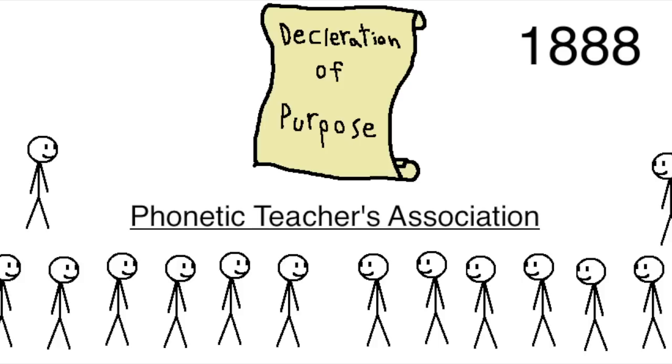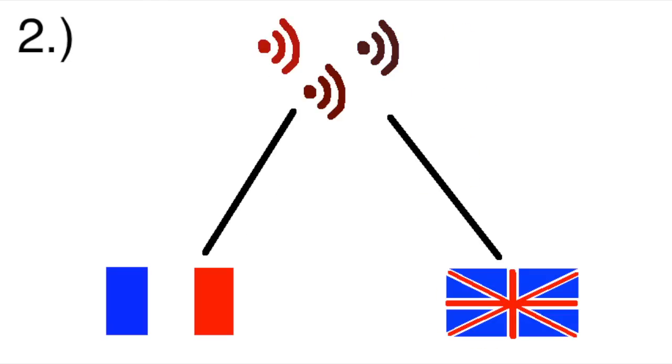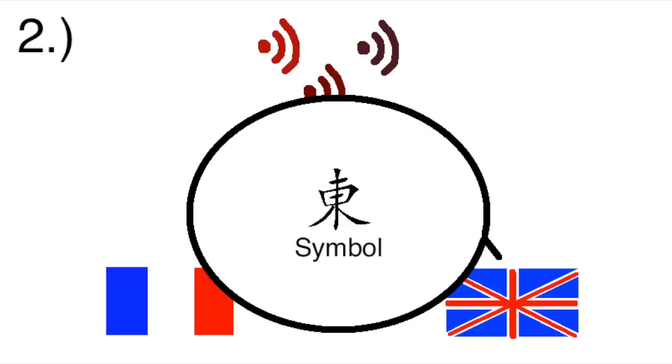In 1888, the group published a Declaration of Purpose and a set of six rules for how the alphabet should be expanded from then on. One, there should be a separate symbol for each sound. Two, when the same sound or slightly different shades of the same sound is used in different languages, the same symbol should always be used.